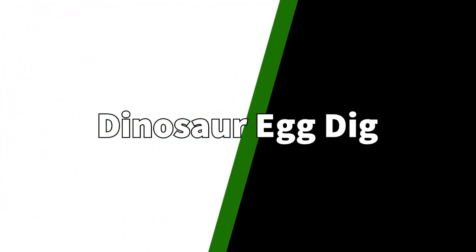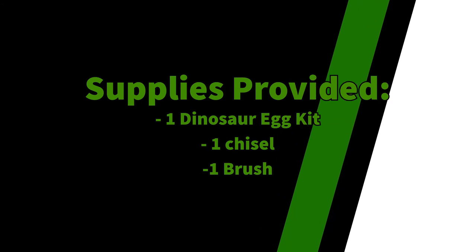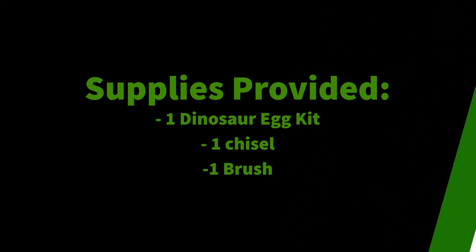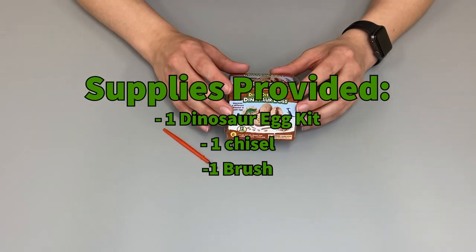Now for the next activity, dinosaur egg dig. The supplies provided for this one can all be found in your bag and will include one dinosaur egg kit, one chisel, and one small brush. Now, before you get started on this one, make sure you are doing it on a surface that you wouldn't mind getting a little dirty.